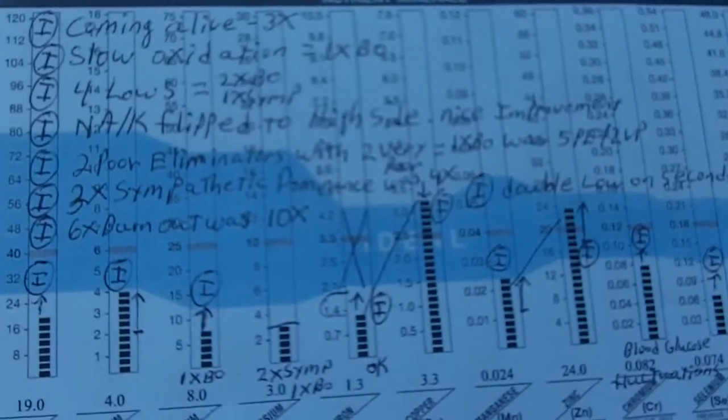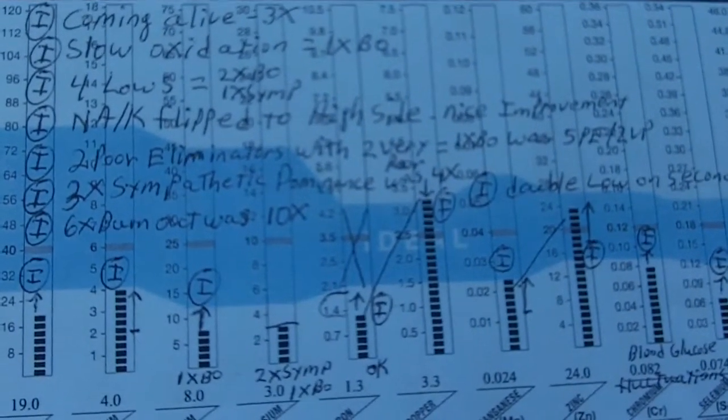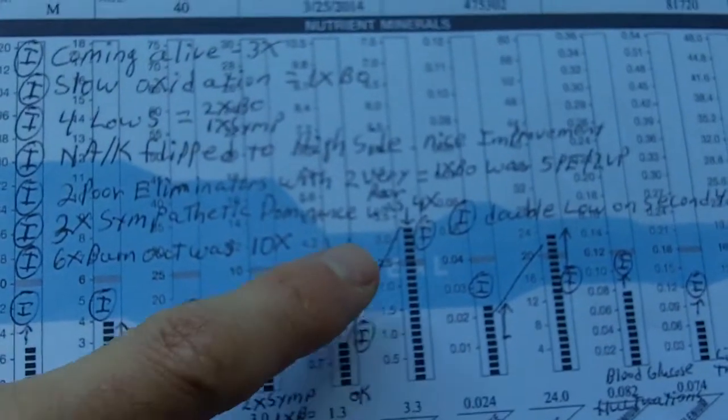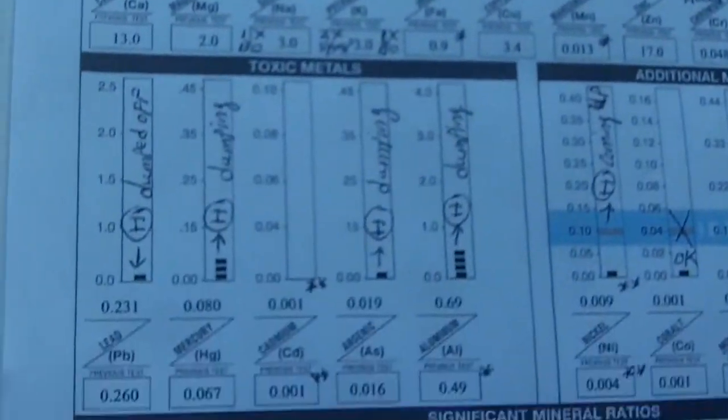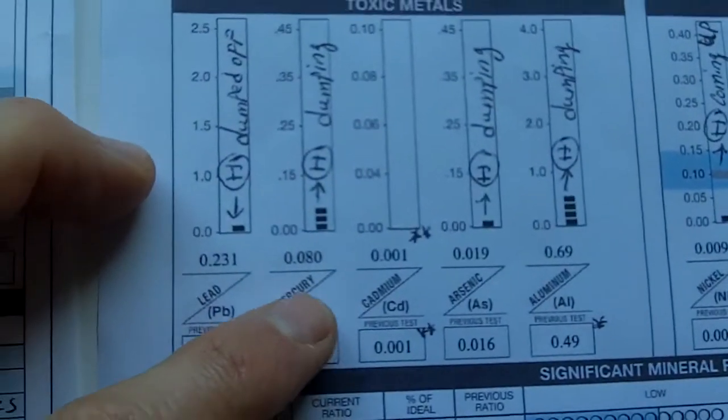It's quite common that once copper has normalized, other heavy metals, for instance mercury, will start to come out. It almost has its turn.